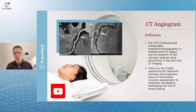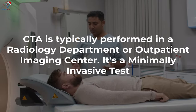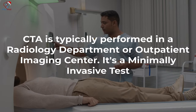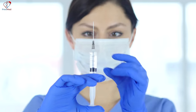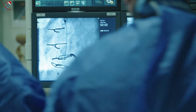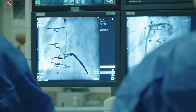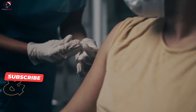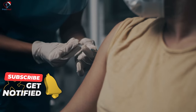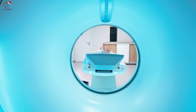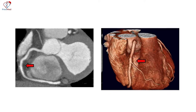CT angiogram is typically performed in a radiology department or an outpatient imaging center. It's a minimally invasive test. You do have an injection and dye, but instead of going up with a needle and catheter through your groin to your heart, you inject the iodine-containing contrast material out in the arm. A few seconds later, they start the CT scanning and examine the arteries, getting images like this.